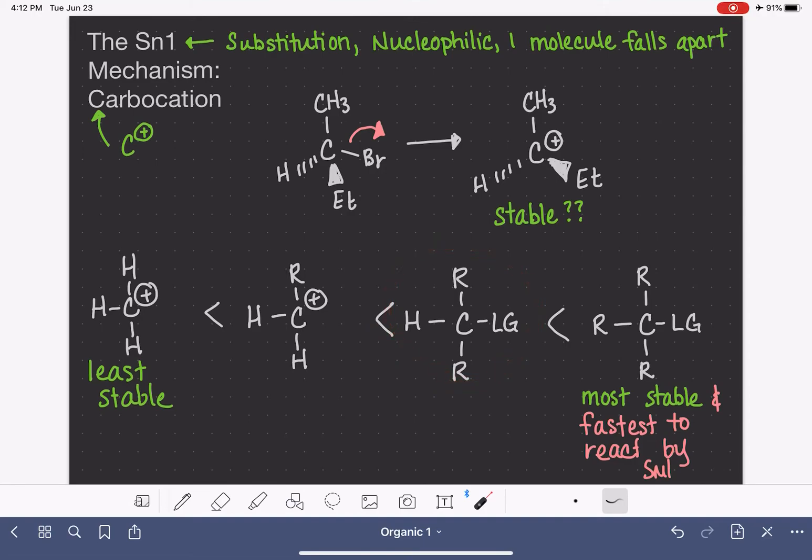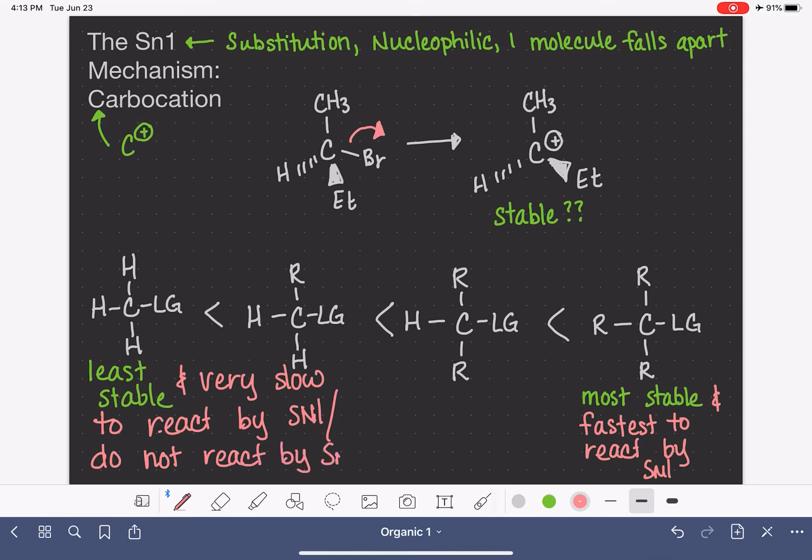The other two types of carbocations are pretty unstable. So a primary carbocation and a methyl carbocation, they are very unstable. And this means that they are extremely slow to react by the SN1 mechanism.